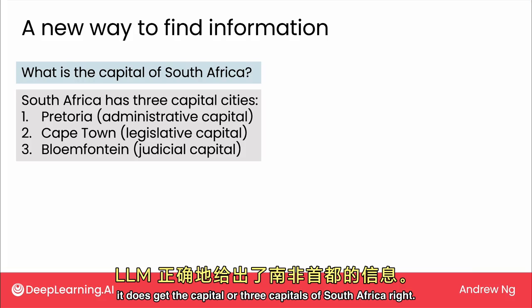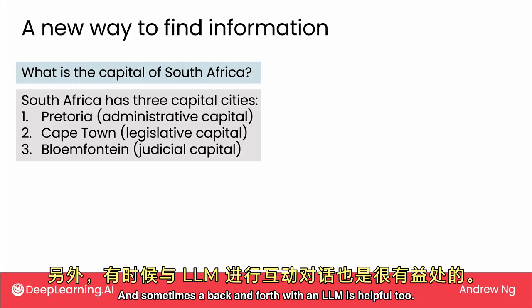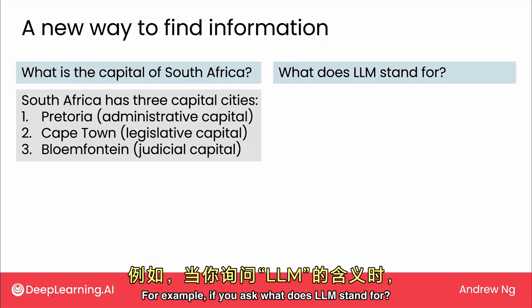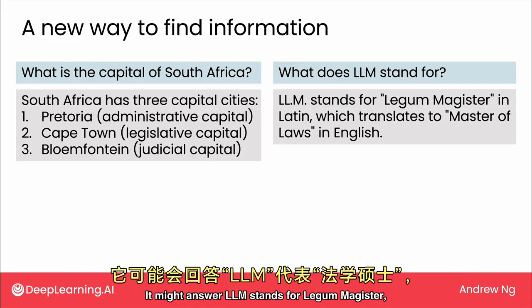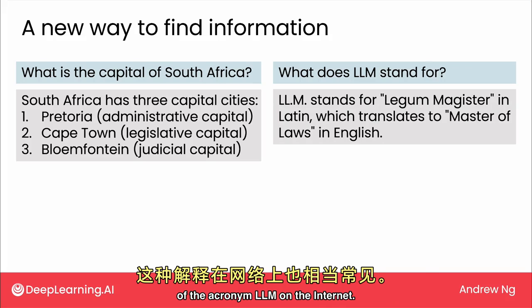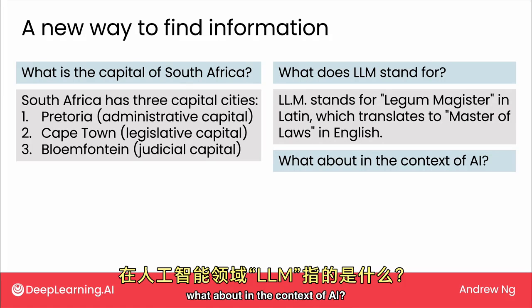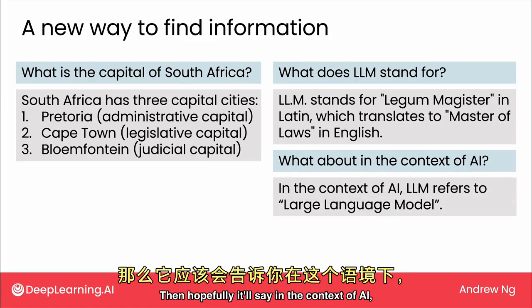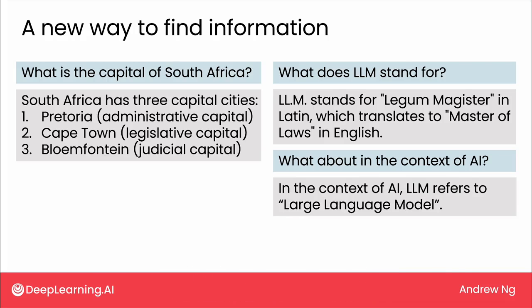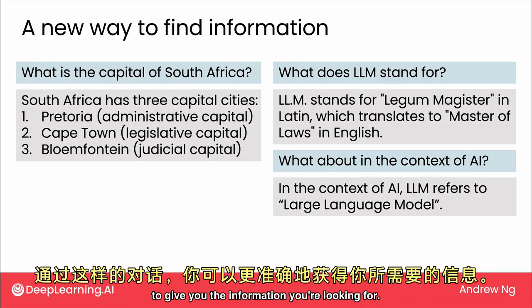In this case, it does get the capital — or three capitals — of South Africa right. Sometimes the back and forth with an LLM is helpful too. For example, if you ask what does LLM stand for, it might answer LLM stands for Legum Magister, which is a term used in law and is actually a pretty common use of the acronym LLM on the internet. But if you then say, what about in the context of AI, it will say an LLM refers to a large language model. So this back and forth can help you give the right context to get the information you're looking for.